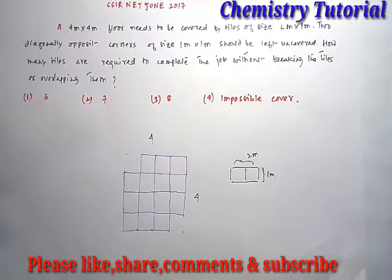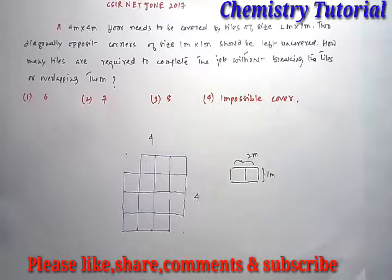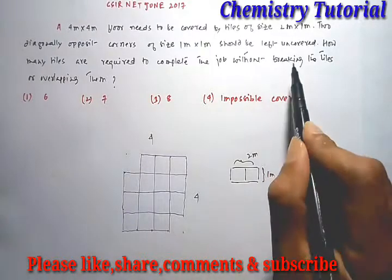This question appears in CSIR NET June 2017. The question is: a 4m x 4m floor needs to be covered by tiles of size 2m x 1m. Two diagonally opposite corners of size 1m x 1m should be left uncovered. How many tiles are required to complete the job without breaking the tiles or overlapping them?